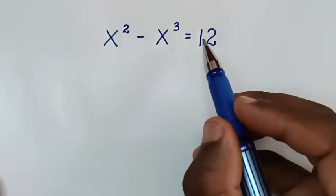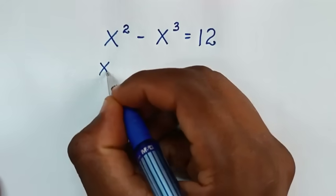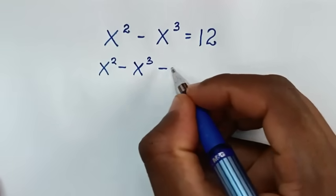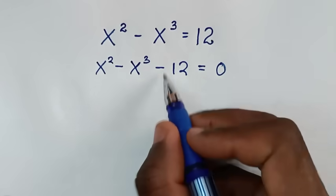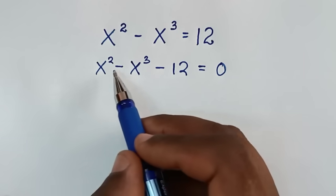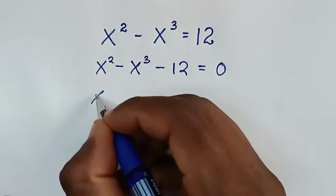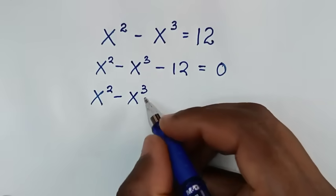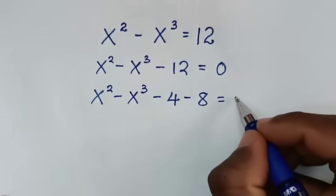In the first step we will take this 12 to the left side, so it will be x squared minus x to the power 3 minus 12 is equal to 0. Then we split this 12 so that it corresponds to the exponents of x squared and x to the power 3, giving us minus 4 minus 8.